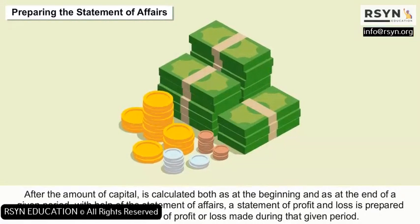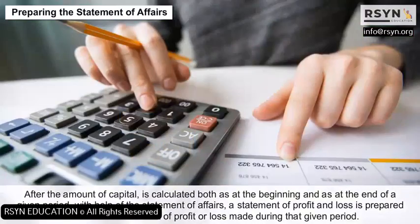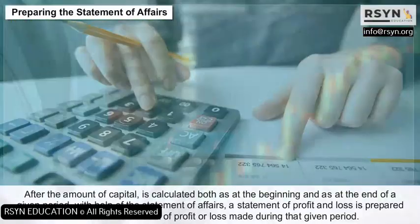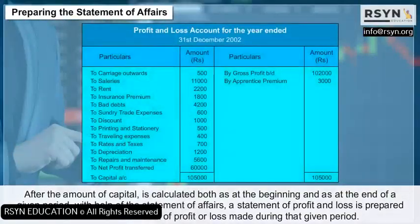After the amount of capital is calculated both at the beginning and at the end of a given period with the help of the statement of affairs, a statement of profit and loss is prepared to calculate the amount of profit or loss made during that given period.